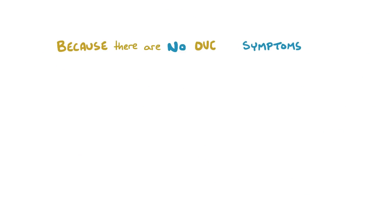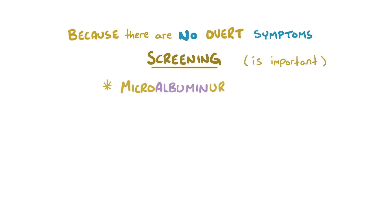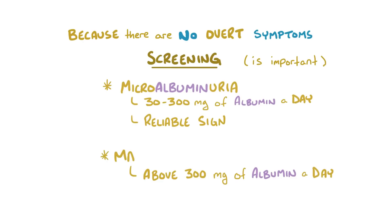Because there are no overt symptoms of diabetic nephropathy, regularly screening the urine of individuals with diabetes is very important. Microalbuminuria — excreting 30–300 mg of albumin per day — is a reliable signal that diabetic nephropathy has started to set in. Excreting above 300 mg per day is considered macroalbuminuria, and is a sure sign of a problem.